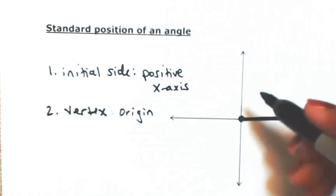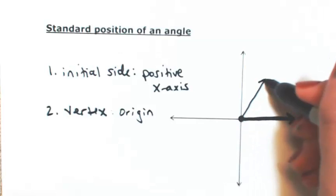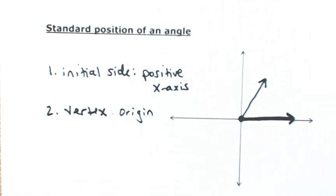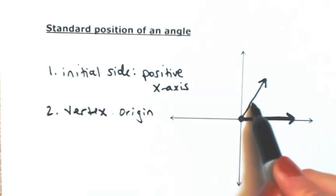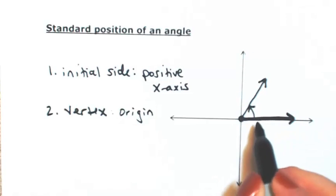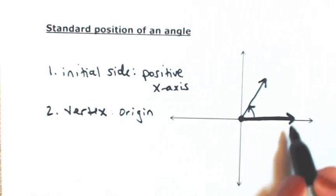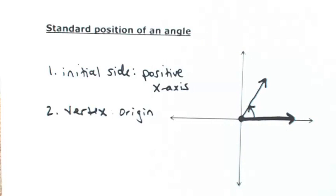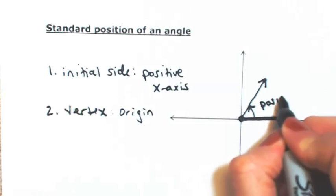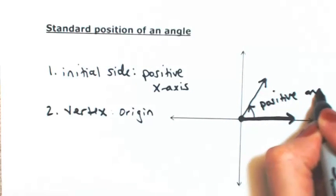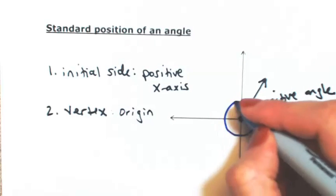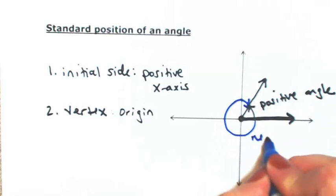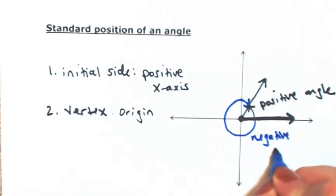So then the terminal side really can be anywhere. And again, the angle can be found by going from the initial to the terminal directly. We can go the other way. We can go around and around and around. But just understand that going counterclockwise, this would be a positive angle. And if I were to go the other way, this would be a negative angle.